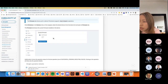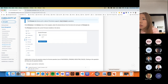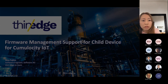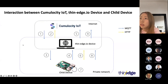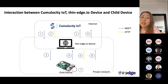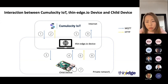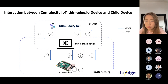So that is what Cumulocity is offering. Now let's take a look at what we are offering. Back to the slides. The firmware management feature is available for both main device and child device. However, in this presentation, we would like to focus only on child devices, because this is what we are currently offering.